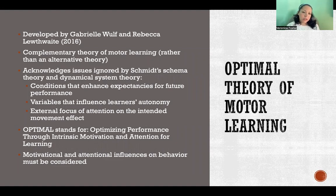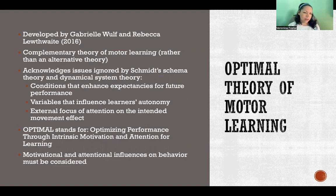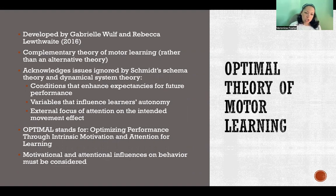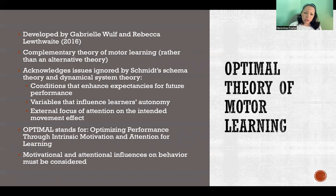It acknowledges issues that are kind of glossed over in those other theories, so it adds to those and fills in the blanks a little bit. There are three important aspects of this theory: one is about conditions that enhance expectancies for future performance; the second is variables that influence learners' autonomy; and the third is external focus of attention on the intended movement effect.